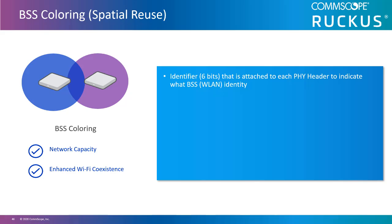Basic service set color is a 6-bit identifier that is attached to each PHY header to indicate what wireless LAN it is transmitted from. In high-density venues such as stadiums or large conference rooms, this problem becomes more acute because of the number of APs and clients. Unnecessary medium contention is referred to as overlapping basic service set, or OBSS, also commonly referred to as co-channel interference. 802.11ax was tasked with addressing the OBSS challenge by improving spatial reuse, which is often referred to as BSS coloring.